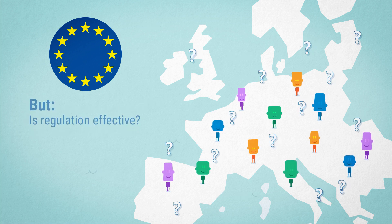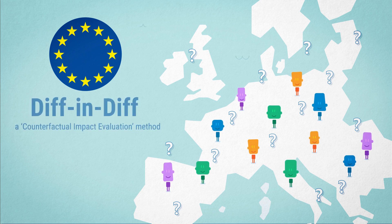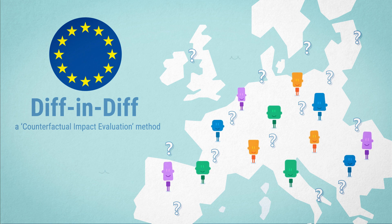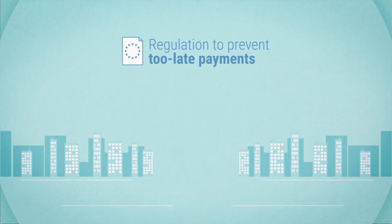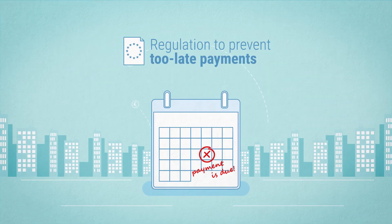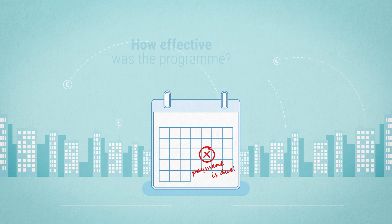One way to establish this is using the method of difference in differences, DIF in DIF — one of the counterfactual impact evaluation methods. Consider some regulation preventing too late payments in commercial transactions.